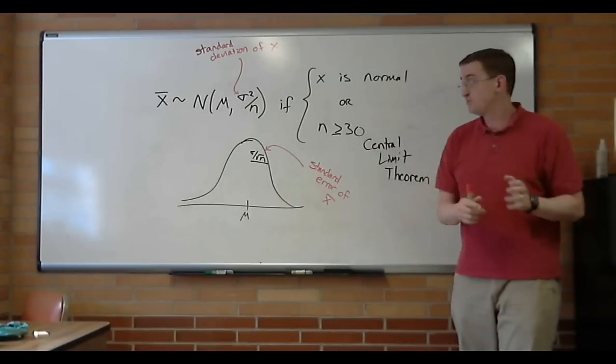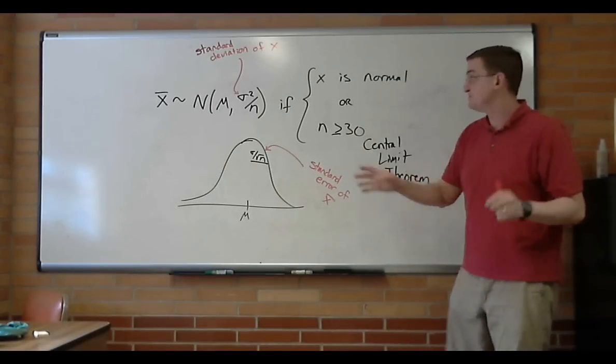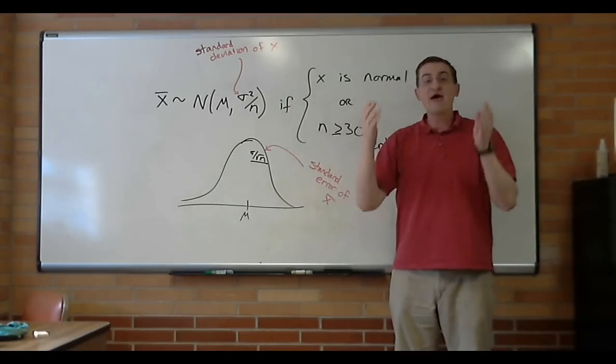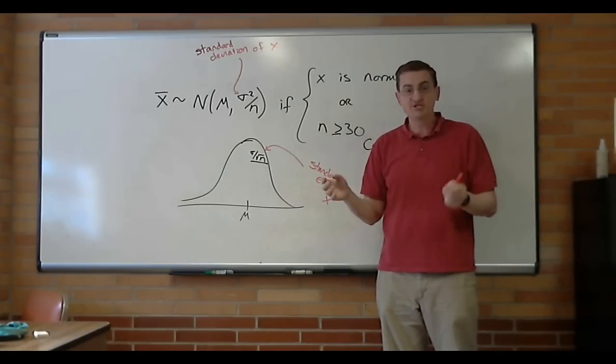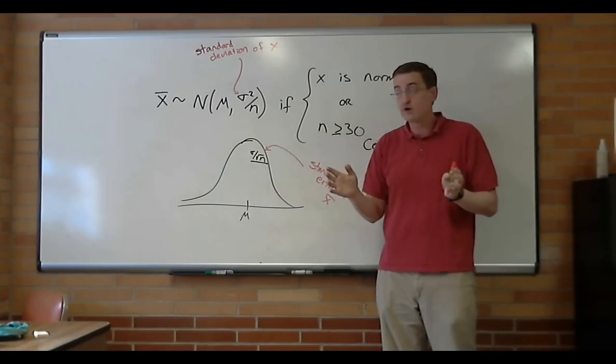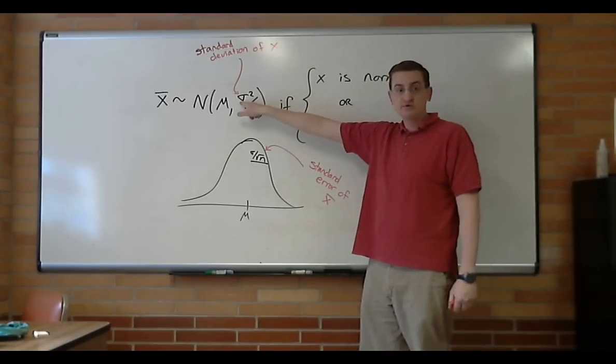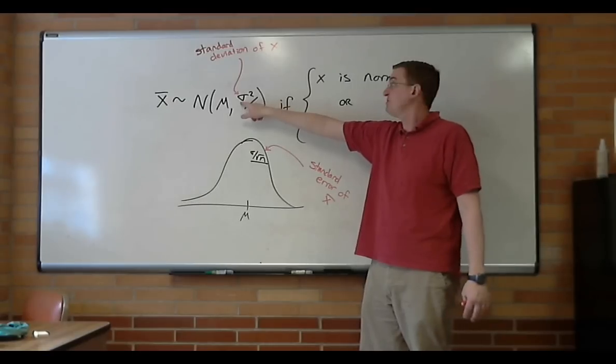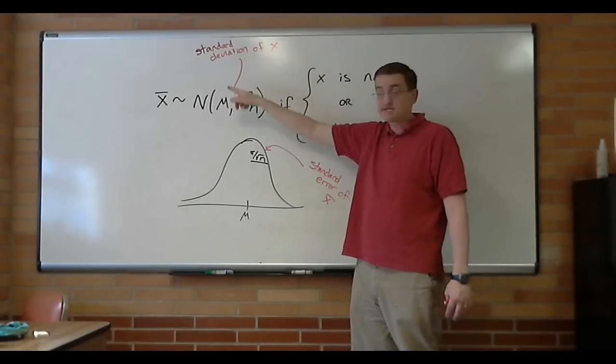Let's cover some important vocabulary real quick, because it's easy to get this confused. If we were talking about an x, a single person, one observation, instead of talking about an average, we were only talking about one. Then σ, or σ², if we were doing variance, would be what we were interested in. σ is the standard deviation of x.